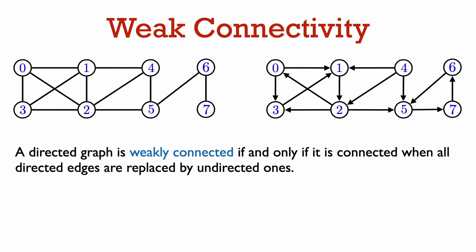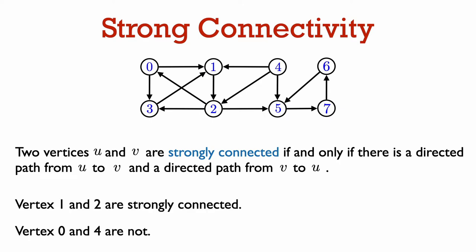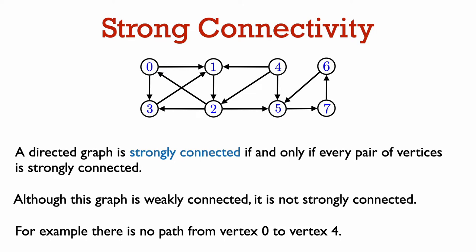It's more typical in directed graphs to study another notion of connectivity, which is called strong connectivity. We say that two vertices u and v are strongly connected if and only if there is a directed path from u to v and a directed path from v to u. In this picture, vertices 1 and 2 are strongly connected — vertex 2 is out-adjacent to vertex 1, and you can walk from vertex 2 to vertex 0 to vertex 1. On the other hand, vertices 0 and 4 are not strongly connected: there is a path from vertex 4 to vertex 0, but there is no path from vertex 0 to vertex 4. A directed graph is strongly connected if for every pair of vertices, there is both a path from u to v and a path from v to u. So this graph is not strongly connected.